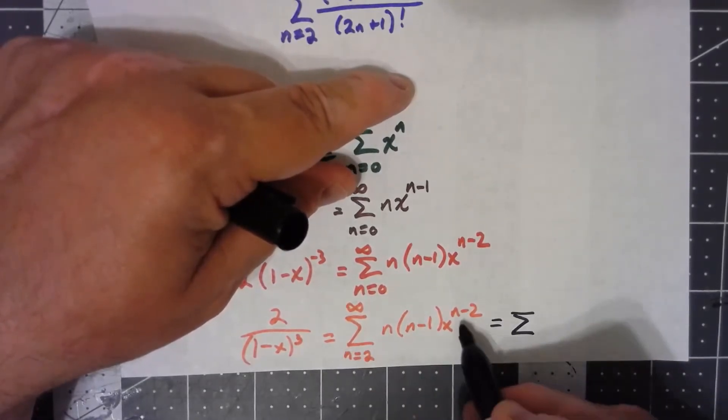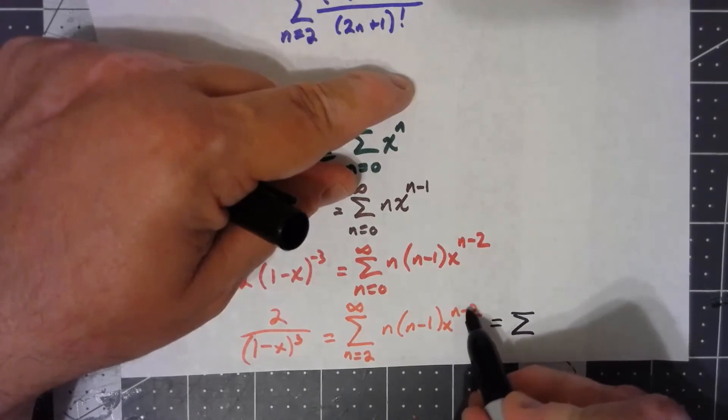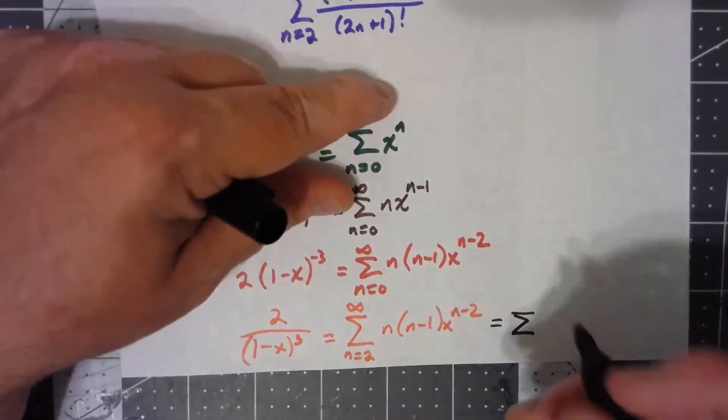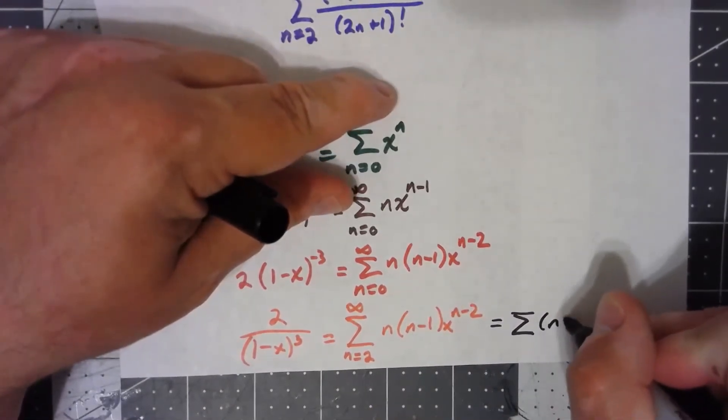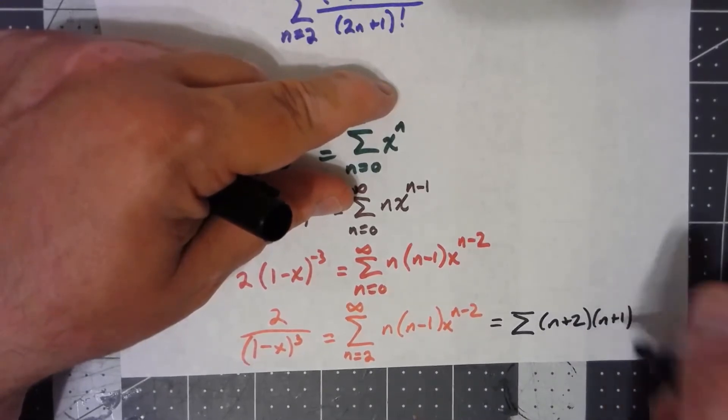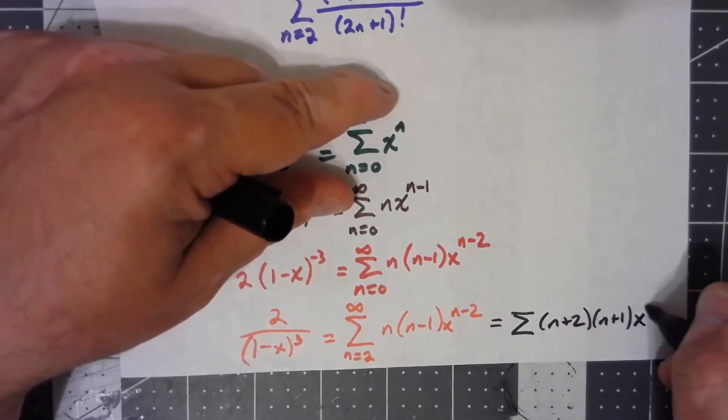So, basically, what I want to do is every n over here, I want to add 2 to. So, I've got an n plus 2. n plus 2 minus 1 is an n plus 1. And an x to the n.